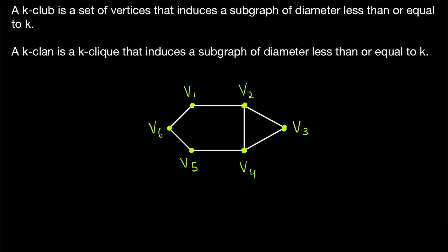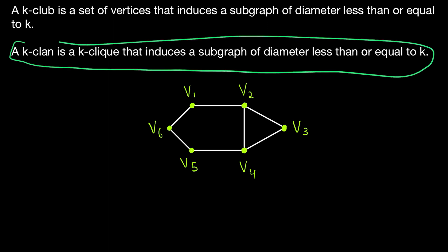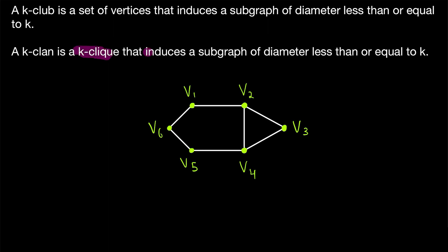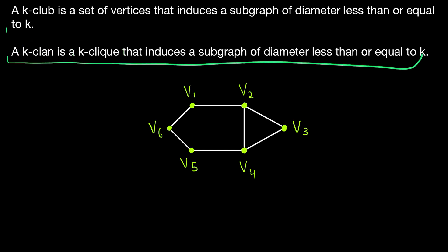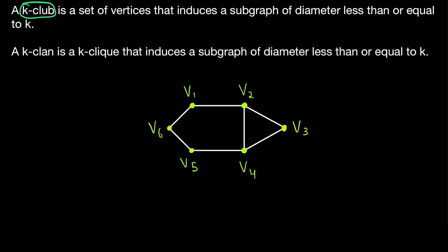With these alternative definitions, a K-club is still the same thing — exactly the same as we just went over. A K-club is a set of vertices that induces a subgraph of diameter less than or equal to K, so that the distance between any two vertices in the K-club must be less than or equal to K and must achieve that distance within the induced subgraph, only allowing paths within the K-club. The change is to the definition of K-clan. A K-clan is a K-clique that induces a subgraph of diameter less than or equal to K — the same definition as K-club except with the additional restriction that a K-clan also has to be a K-clique. You might wonder how this is any different from a K-club, and you'd be absolutely correct to question that.